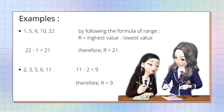Example 1: The given data set is 1, 5, 9, 10, and 22. By following the formula of range — R equals highest value minus lowest value — we must find the highest and lowest values first. The highest value is 22 and the lowest value is 1. So R equals 22 minus 1, which equals 21. Therefore, our range is 21.